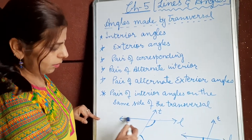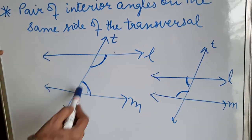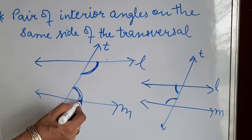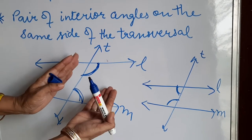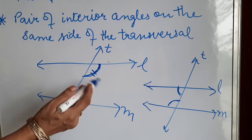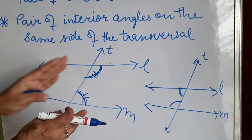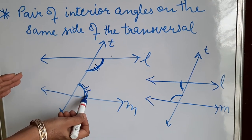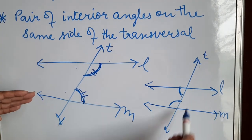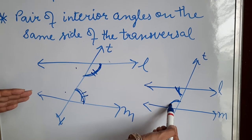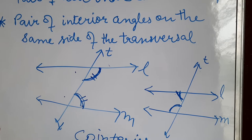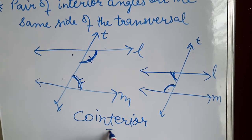Today I am telling you: suppose two lines L and M are given to you and T is the transversal. These two angles are co-interior angles — interior angles on the same side of the transversal. Both lie between the lines, so they are interior, and both are on the same side of the transversal. 'Co' means partner — these two are partners — and 'interior' means on the same side of the transversal.